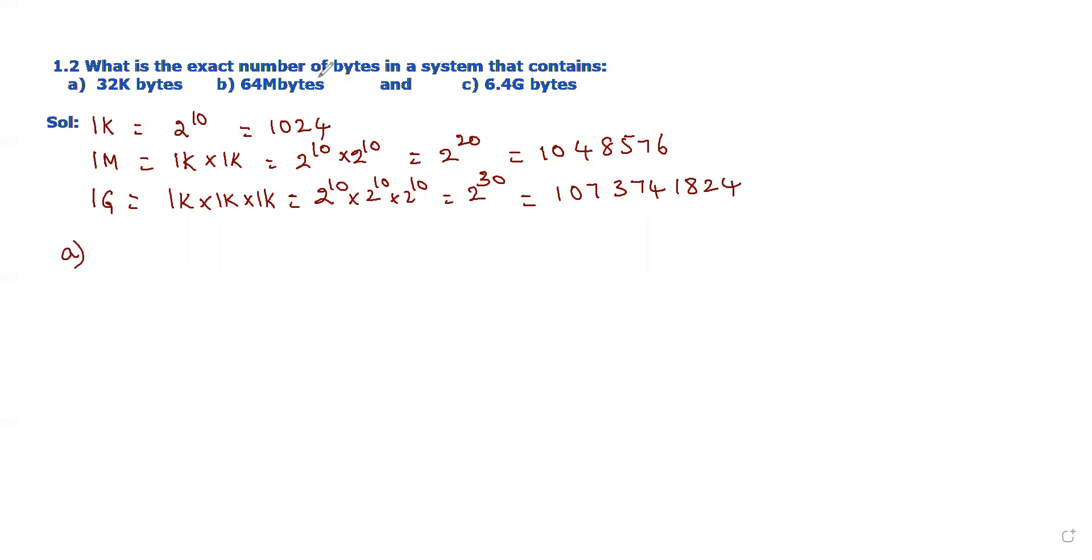The first part is 32 kilobytes. Now we should substitute the values of 1K, which is equal to 32 into 1K value is 1024. When we multiply these two values it becomes 32,768 bytes. This is the exact value of the number of bytes for part a.